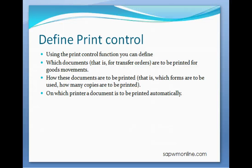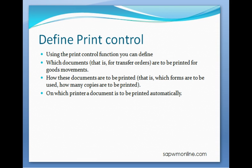The SAP WM Print Control is different from other modules wherein forms are printed by use of condition types and we maintain condition records to print various forms. In a warehouse, we maintain all the necessary inputs in the Print Control functionality, and all prints are controlled via this Print Control functionality.